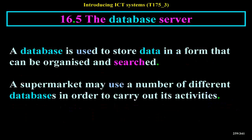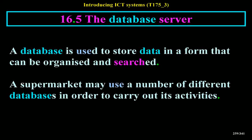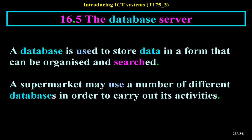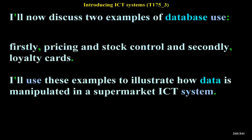The database server: a database is used to store data in a form that can be organized and searched. A supermarket may use a number of different databases in order to carry out its activities. I'll now discuss two examples of database use: firstly, pricing and stock control, and secondly, loyalty cards. I'll use these examples to illustrate how data is manipulated in a supermarket ICT system.